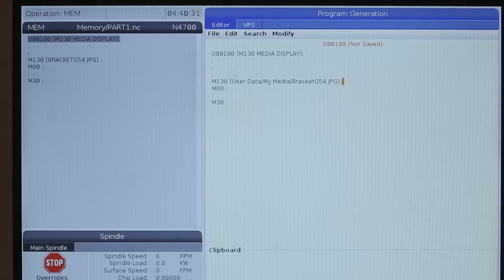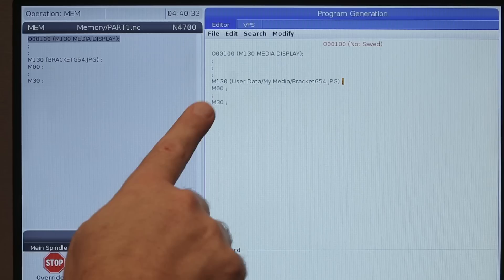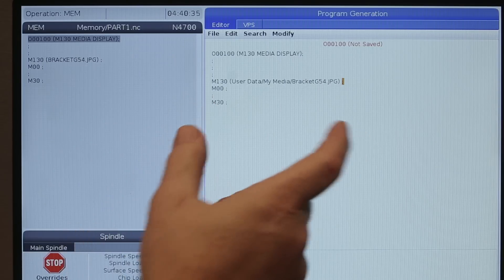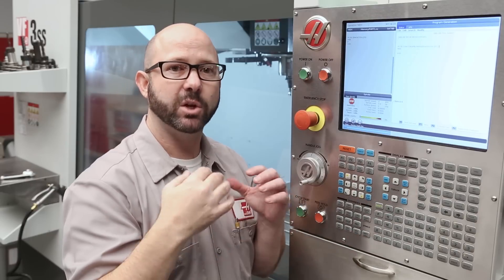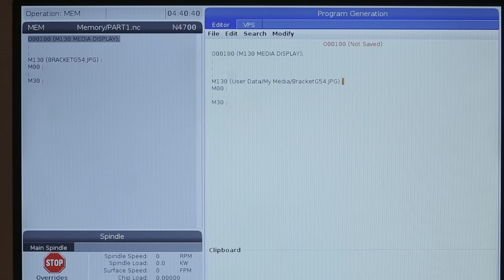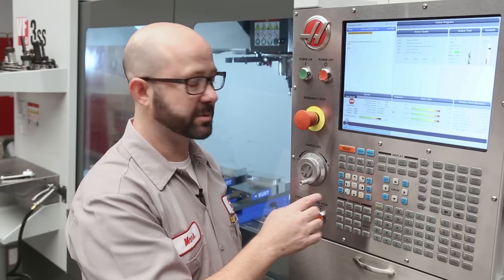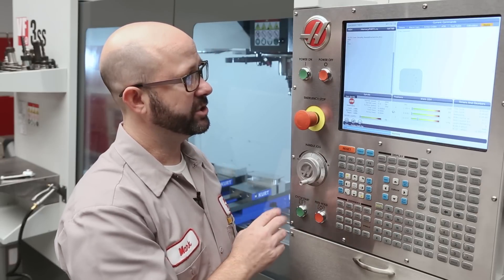And there it is: M130 and then in parentheses it says user data/my media/bracket_g54.jpeg. It actually wrote the entire file path in there for me automatically. If we run this program, it's gonna display that picture just like it had previously.